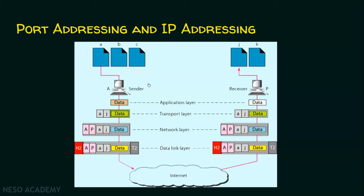This is the sender and this is the receiver. As far as hosts are concerned, A is the sender computer and P is the receiver computer. In the receiver computer there are two processes running: process number one with port number J, and process number two with port number K. The data generated by the process with port number A in the sender must reach the receiver computer's process with port number J. The sender's application layer generates the data and gives it to the transport layer. The transport layer adds the source port number A and the destination port number J.